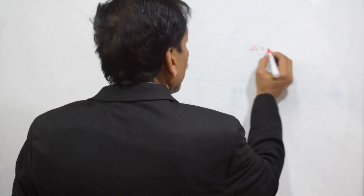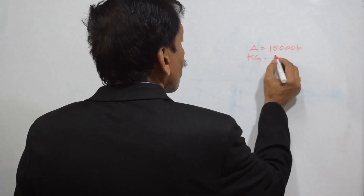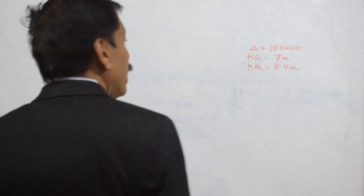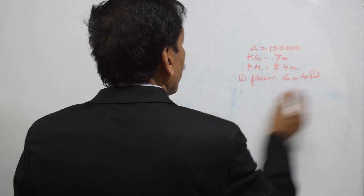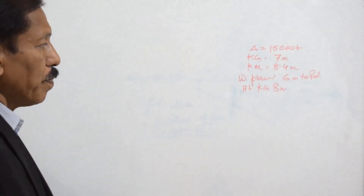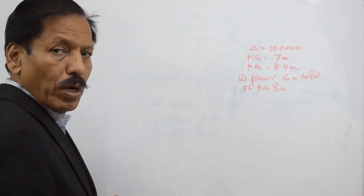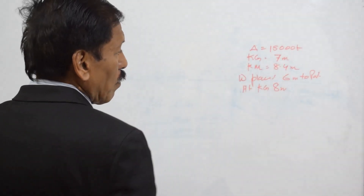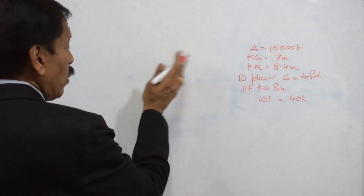Let us say the displacement is equal to 15,000 tons, the KG of the ship initially is 7 meters, and KM is equal to 8.4 meters. A weight W is placed on deck 6 meters to port and at a KG of 8 meters. We are placing the weight at a height of 8 meters, which is higher than the center of gravity of the ship. The weight is 40 tons. So we do KG by moment calculations.